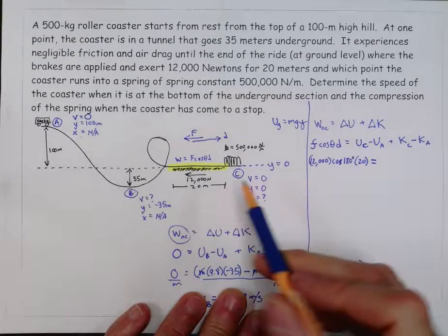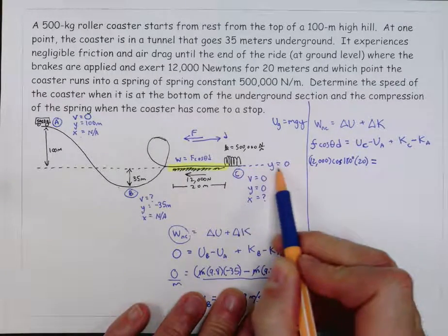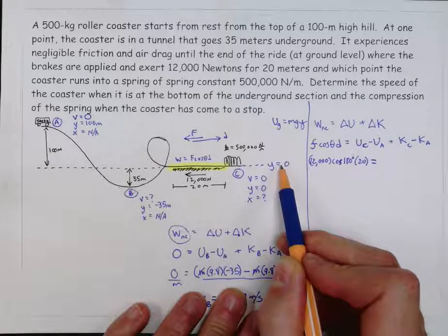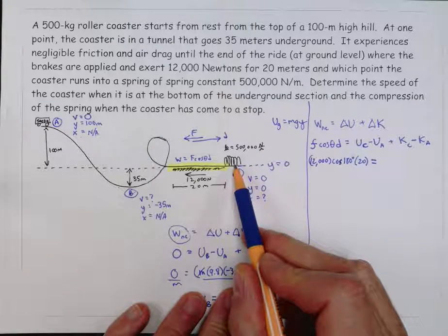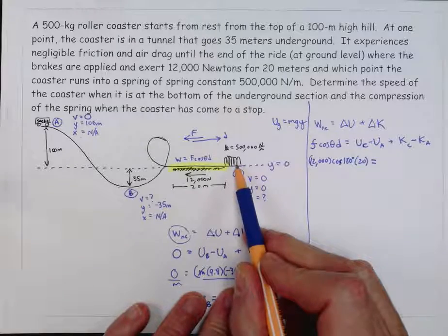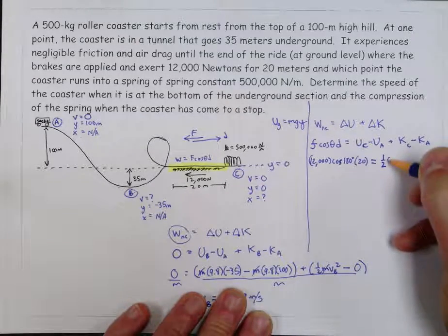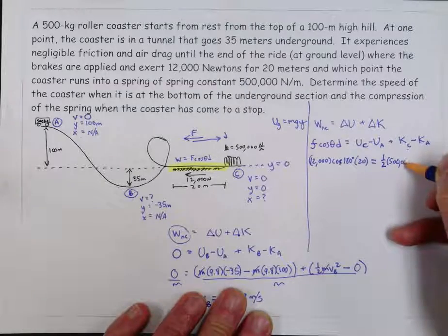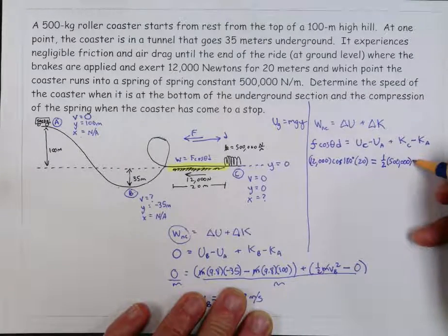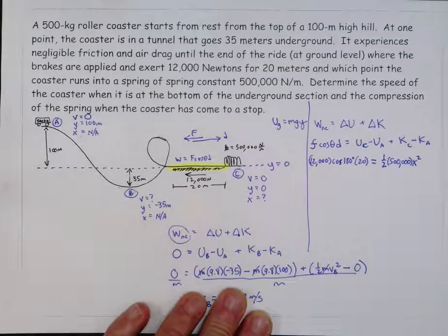Potential energy at c. Well, we have a y-coordinate of zero, so there's no gravitational potential energy. But it's going to be compressing a spring. And so we have elastic potential energy. So we have one-half. k is given as 500,000. And then x squared. And x is the value that we're looking for.